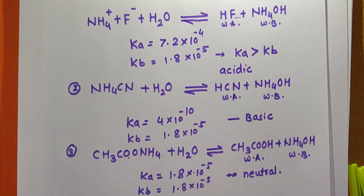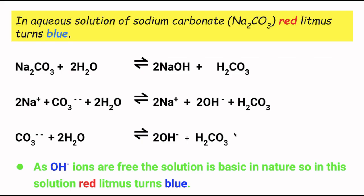Hydrolysis can be explained with further examples. We can determine the nature of an aqueous solution of any salt and its effect on litmus paper. For example, in an aqueous solution of sodium carbonate, Na₂CO₃, red litmus turns blue. This can be explained by the hydrolysis reaction of Na₂CO₃.